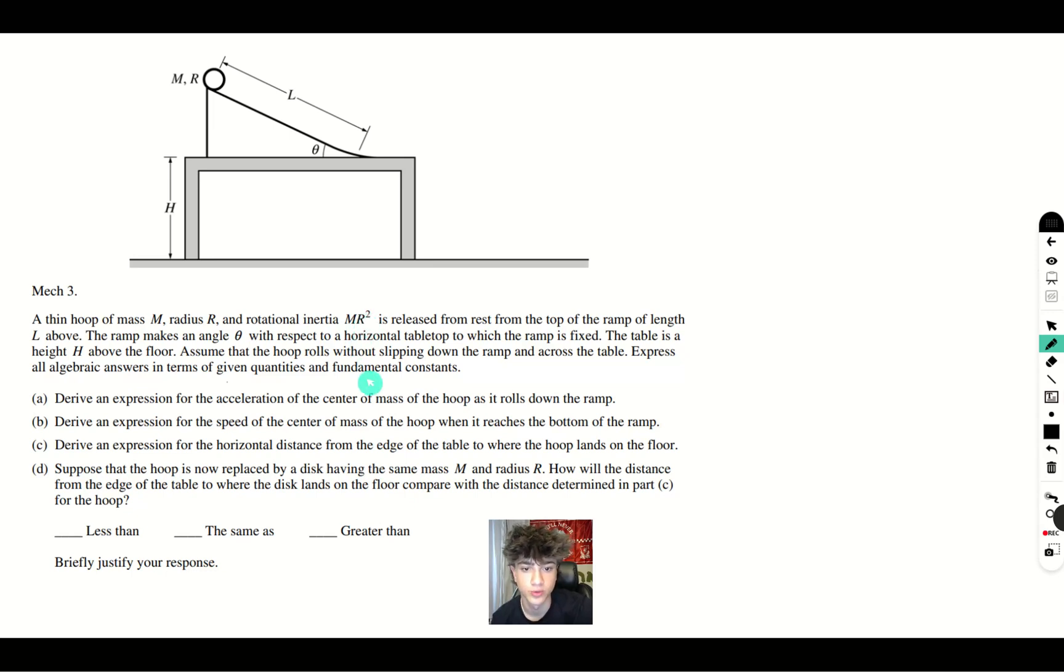Assume that the hoop rolls without slipping down the ramp and across the table. Express all algebraic answers in terms of given quantities and fundamental constants.